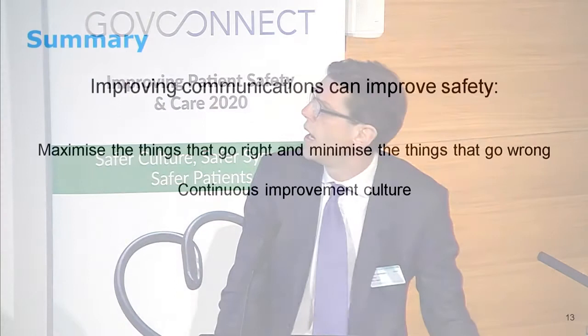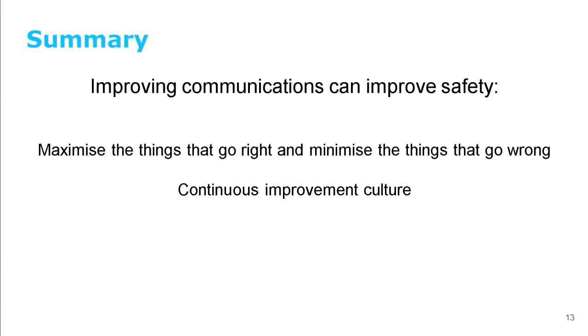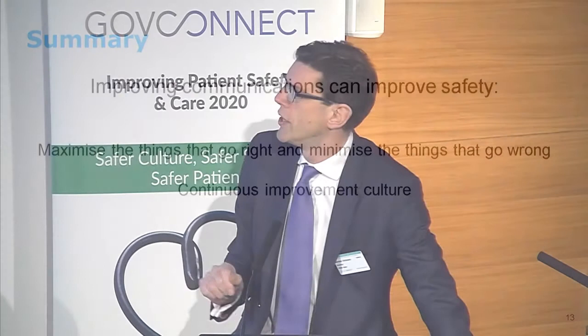Just to summarise: the more you can enhance communications and make them consistent and allow everybody to access them very easily, the higher the chance that these two things come right — firstly, you maximise the good things, and secondly you can get a continuous improvement culture going, particularly with the feedback facilities on an app. It becomes an iterative process: you publish stuff, ask people what's missing, what's good, what's bad, change it up, make it better and better over time. That was all I had to say. If anybody would like to ask any questions, very welcome.